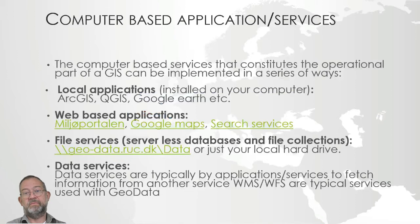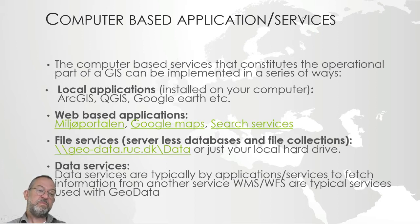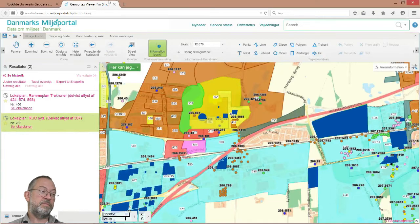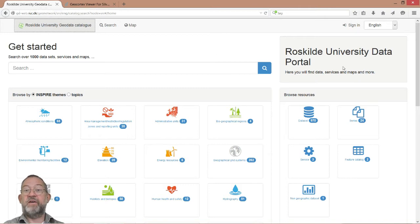Google Maps is another example — if you log in you can also create your own maps, it's not just for displaying maps, you can put in your own data. Now I want to show a search service. Going back to my web browser, this is our data portal where we can search for different data — what data do we have access to or can download? For example, what do we have on elevation?